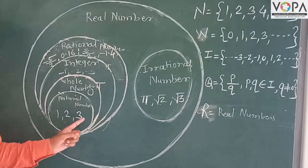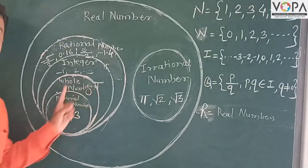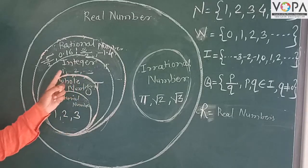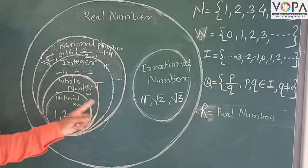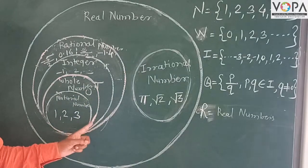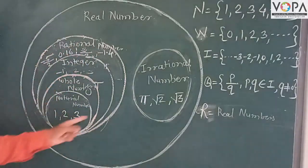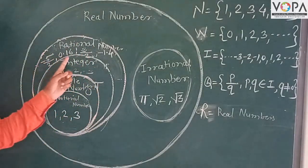Rational numbers: 1, 2, 3. Whole numbers: 0 plus 1, 2, 3. Integer: minus 1, minus 2, minus 3 plus 0 plus 1, 2, 3. And rational numbers: minus 5 upon 2, 0.16, 3 upon 2 is called as rational numbers.